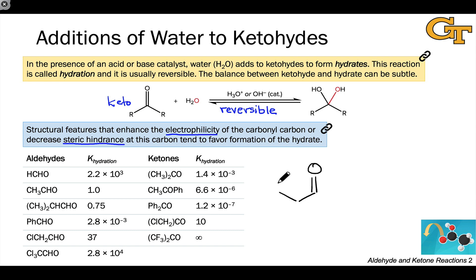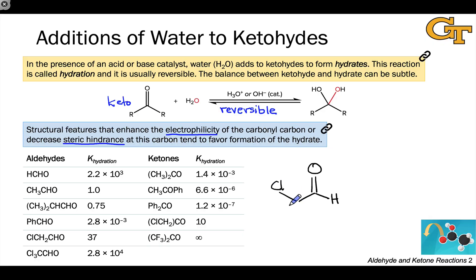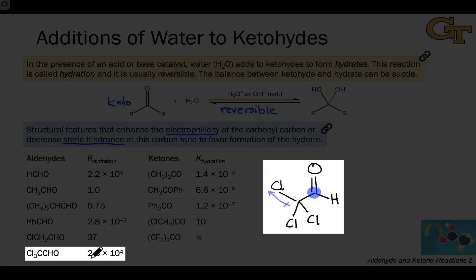When we replace one of the hydrogens in acetaldehyde with a chlorine, we see the effect of electrophilicity come into play. Chloroacetaldehyde has a K-value of 37, indicating the hydrate is somewhat favored relative to the carbonyl form. Compared to acetaldehyde, the replacement of hydrogen with chlorine increases the equilibrium constant because chlorine exerts an inductive electron-withdrawing effect through the sigma bonds, increasing the electrophilicity of the carbonyl carbon and facilitating hydration. This effect compounds with more chlorine — trichloroacetaldehyde (chloral) has among the highest equilibrium constants on the list, with the hydrate present essentially 100% when dissolved in water.